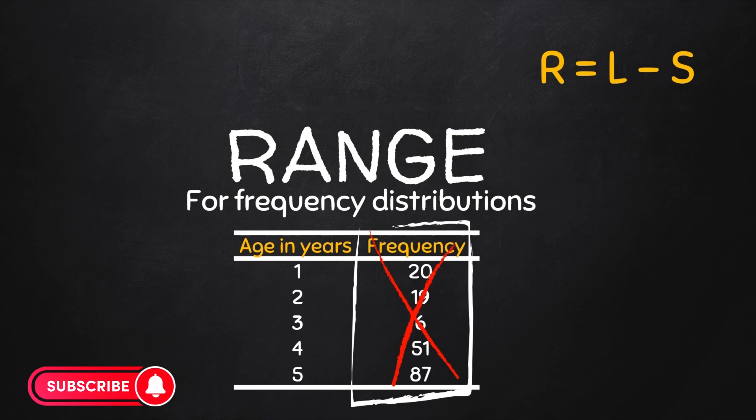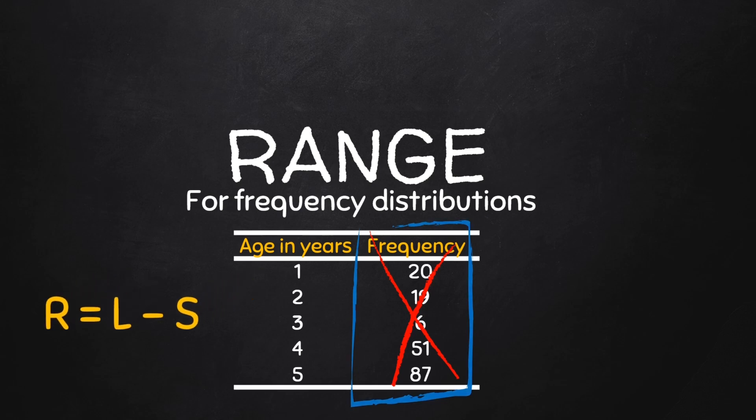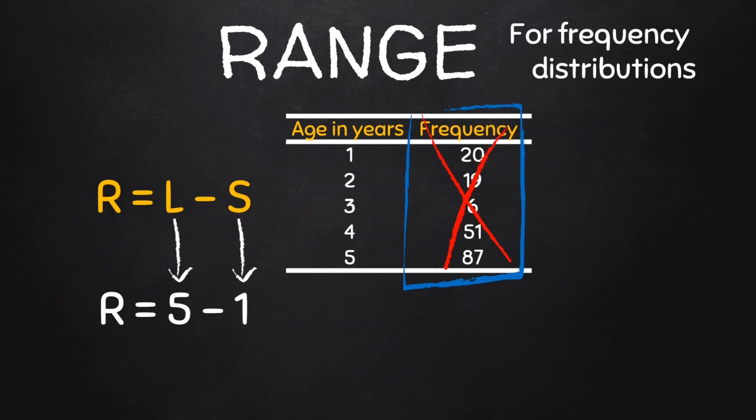So here the range will be given by the largest value L, which is 5 years, minus the smallest value S, which is 1 year, and so our range in this case is 4 years.